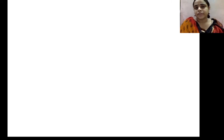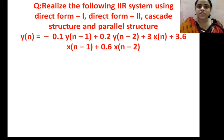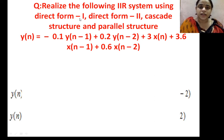So far we have discussed about all the structures of IIR filters. Now let us discuss about some problems on IIR filter. This problem covers all the structures of IIR filter. Realize the following IIR system using direct form 1, direct form 2, cascade structure, and parallel structure.